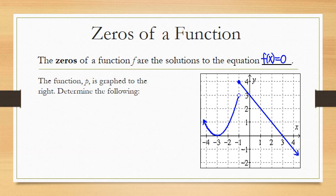The function, p, is graphed to the right. Determine the following. The zeros of p. So again, I'm figuring out what x values have a y value of zero. Well, y is going to equal zero on the x-axis. So that means that the zeros are actually the x-intercepts. So this value here, when x equals negative three, has a y value of zero. And this value here, when x is three, has a y value of zero. So the zeros of p are negative three and three.